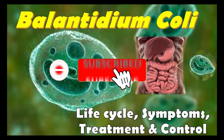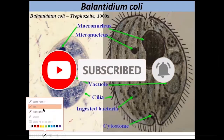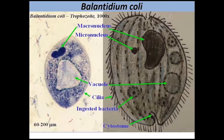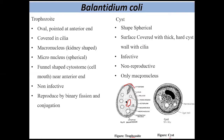Please subscribe to my channel. In Balantidium coli, there are two morphological stages in their life cycle: the trophozoite stage and the cyst stage. In the trophozoite stage, they are oval in shape, having a pointed anterior end, and a kidney-shaped macronucleus, which you can see in this diagram.